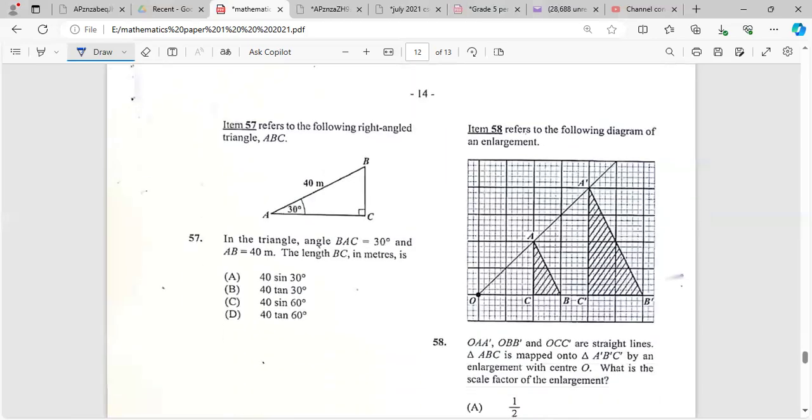Item 57 refers to the following. In triangle ABC, angle DAC is 30 degrees and AB is 40. Then BC in meters - we want to find BC. We're looking at the opposite and we're given the hypotenuse. So that's sine. Sin 30 degrees equals the opposite, which is BC, upon the hypotenuse, which is 40. So we cross multiply: BC equals sin 30 times 40. That's E.